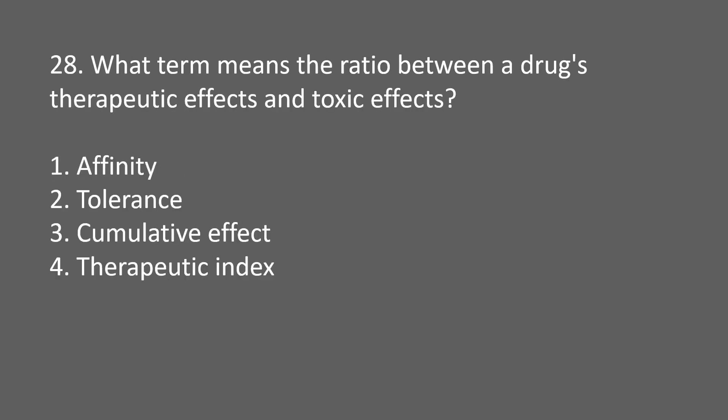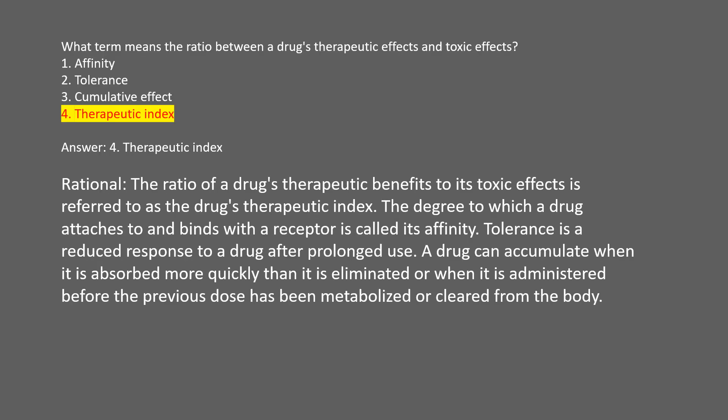What term means the ratio between a drug's therapeutic effects and toxic effects? 1. Affinity. 2. Tolerance. 3. Cumulative effect. 4. Therapeutic index. Answer: 4. Therapeutic index. Rational: the ratio of a drug's therapeutic benefits to its toxic effects is referred to as the drug's therapeutic index. Affinity is the degree to which a drug attaches to and binds with a receptor. Tolerance is a reduced response to a drug after prolonged use.